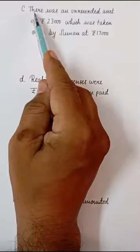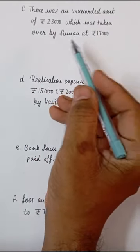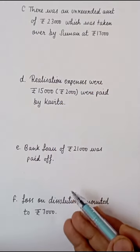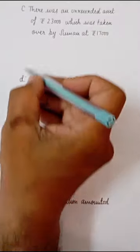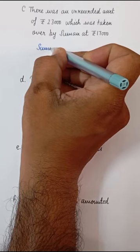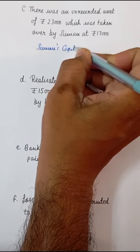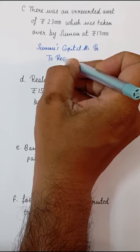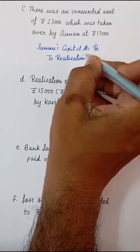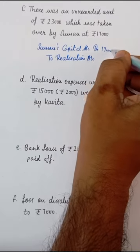तीसरा transaction: There was an unrecorded asset of Rs.23,000 which was taken over by Suman at Rs.17,000। एक unrecorded asset थी जिसको Suman ने take over कर लिया at Rs.17,000, जबकि वो थी Rs.23,000 की। चाहे recorded asset हो चाहे unrecorded asset, जिस price पे उसको take over किया गया है उस price पे entry बनेगी। Entry बनेगी: Suman's Capital Account Debit to Realization Account with Rs.17,000।